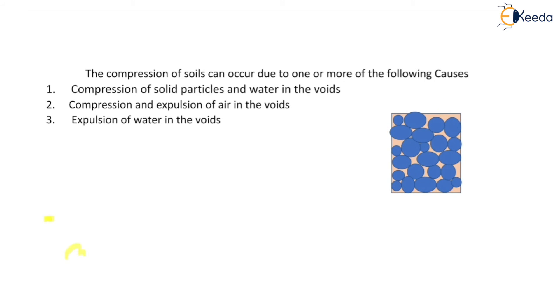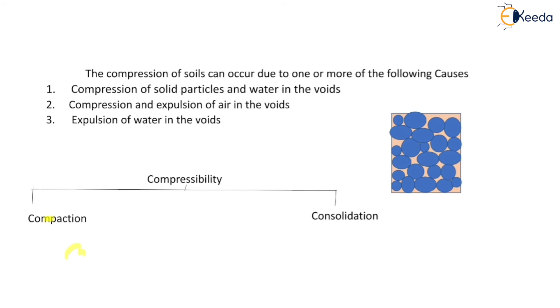Compressibility of the soil is identified in two ways: first is compaction and second is consolidation. So first we will discuss compaction.